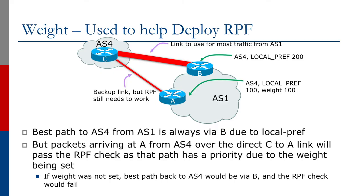So when would we actually use weight? There are a couple of examples used on networks and on the internet today. The first example is to help deploy RPF — reverse path forwarding — which is a common check used to catch spoofed source addresses coming from adjacent networks on the internet.